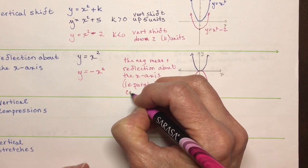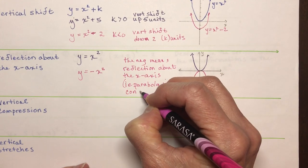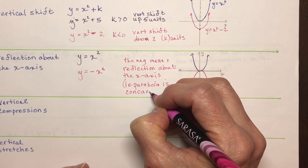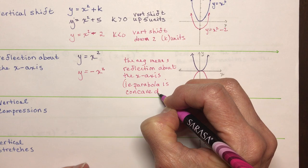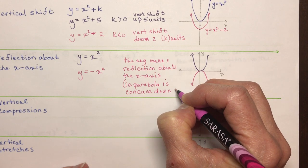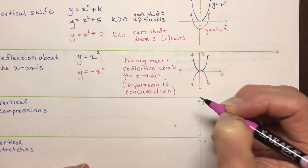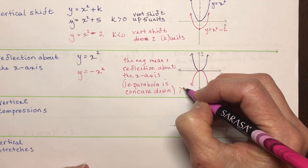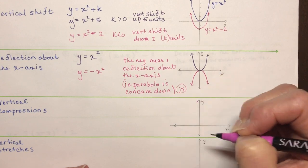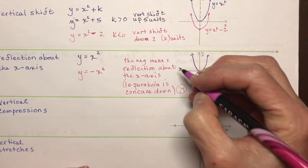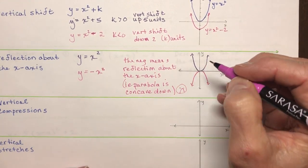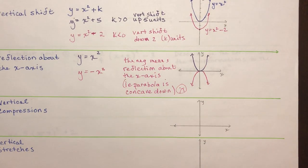Remember: concave up — think of a cup; concave down — think of a frown. Concave down, frown. Concave up, make a cup out of it. The next one is vertical compressions.